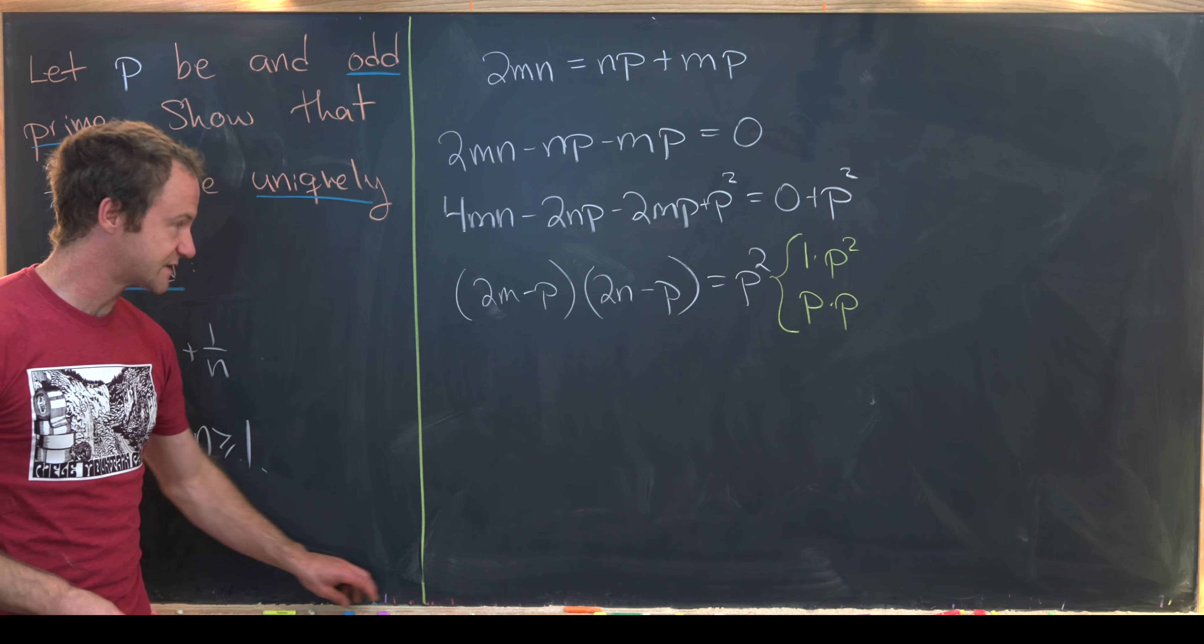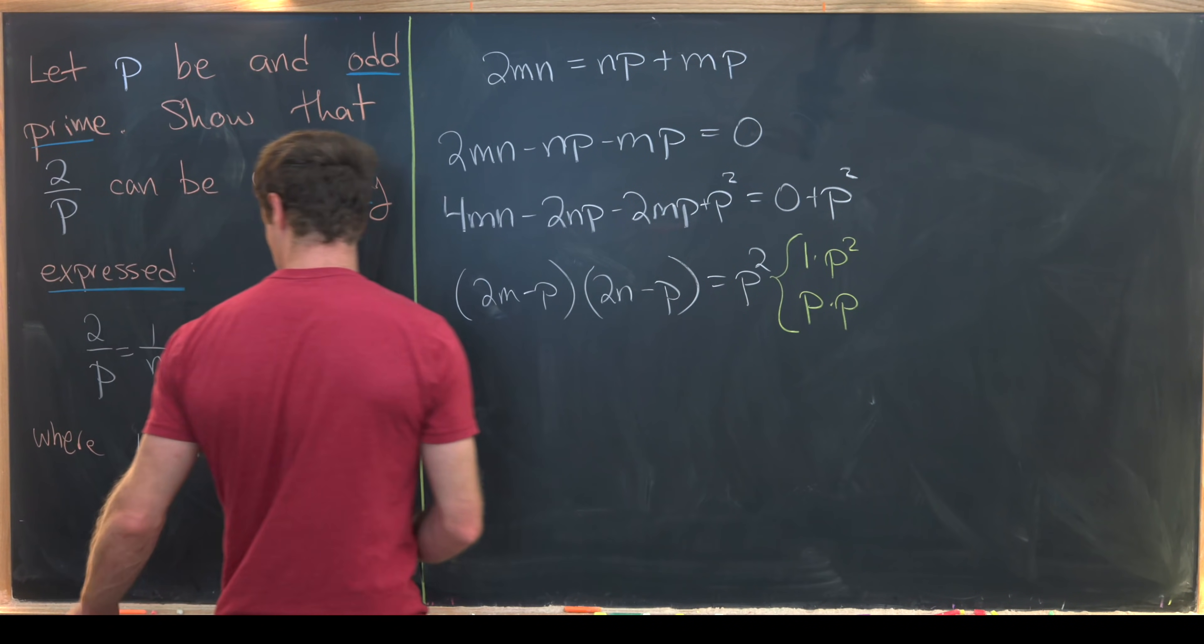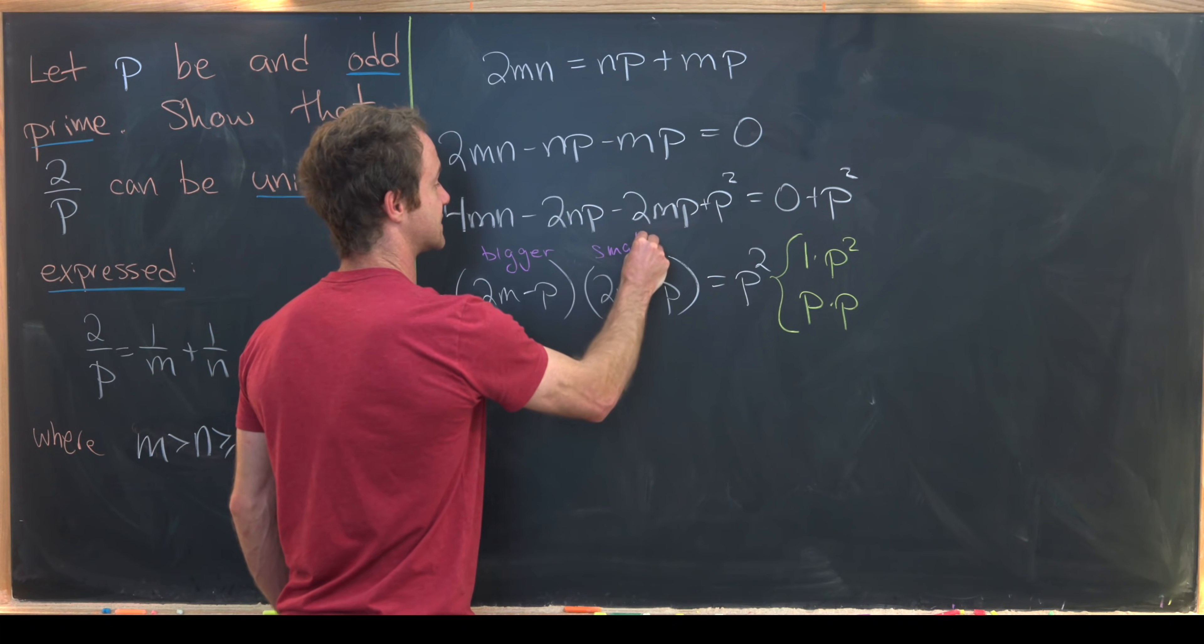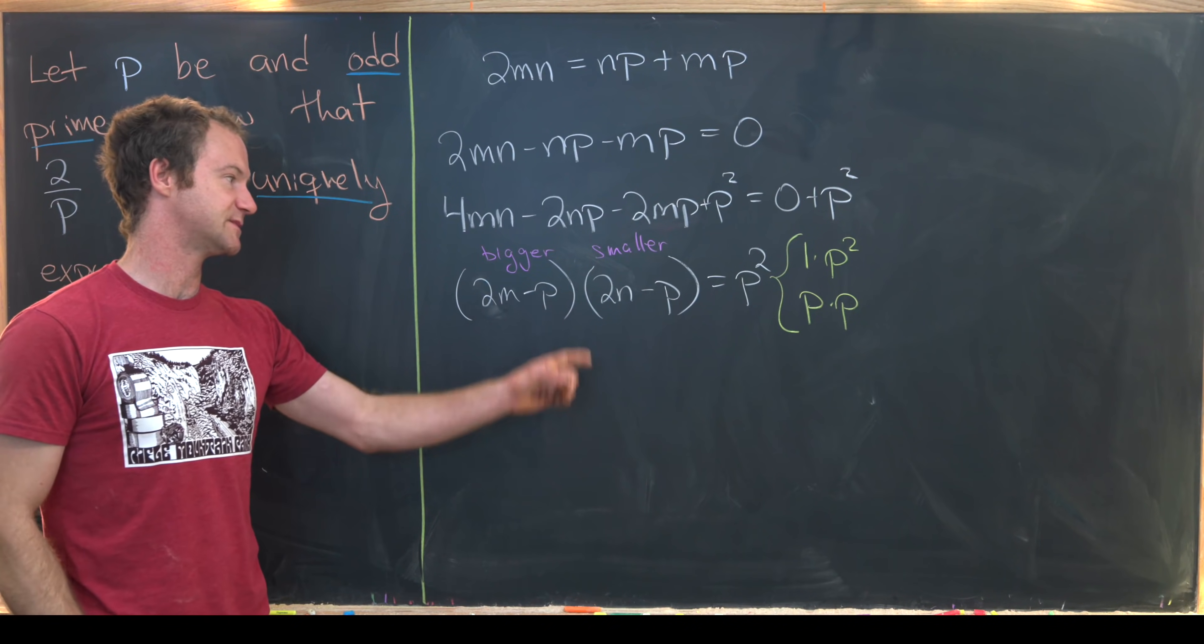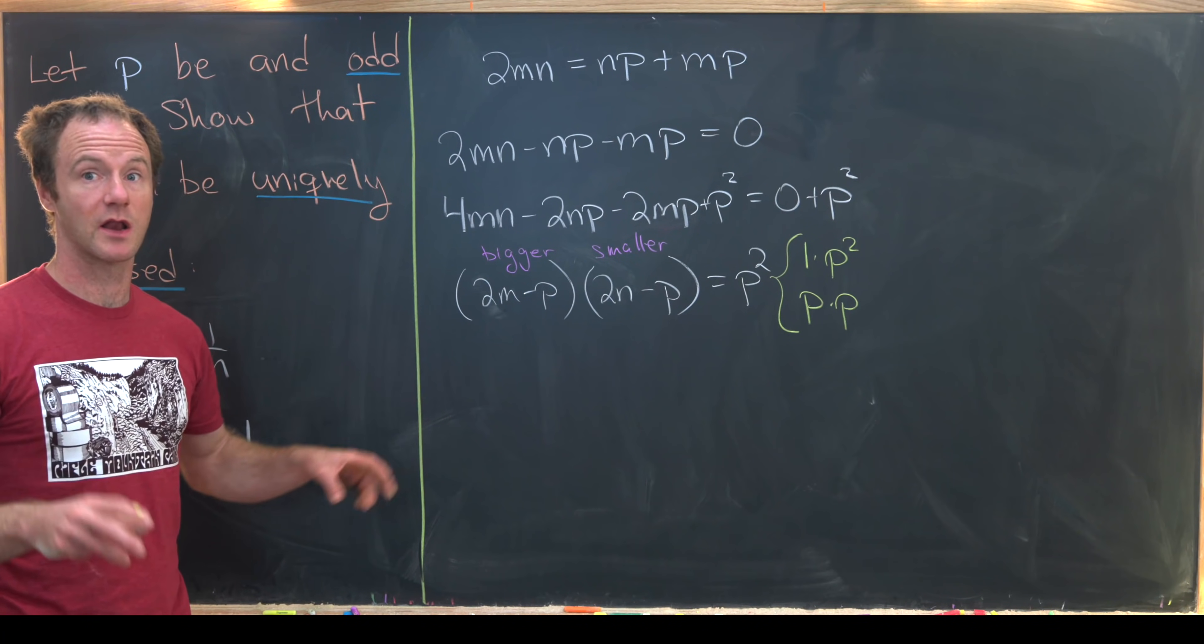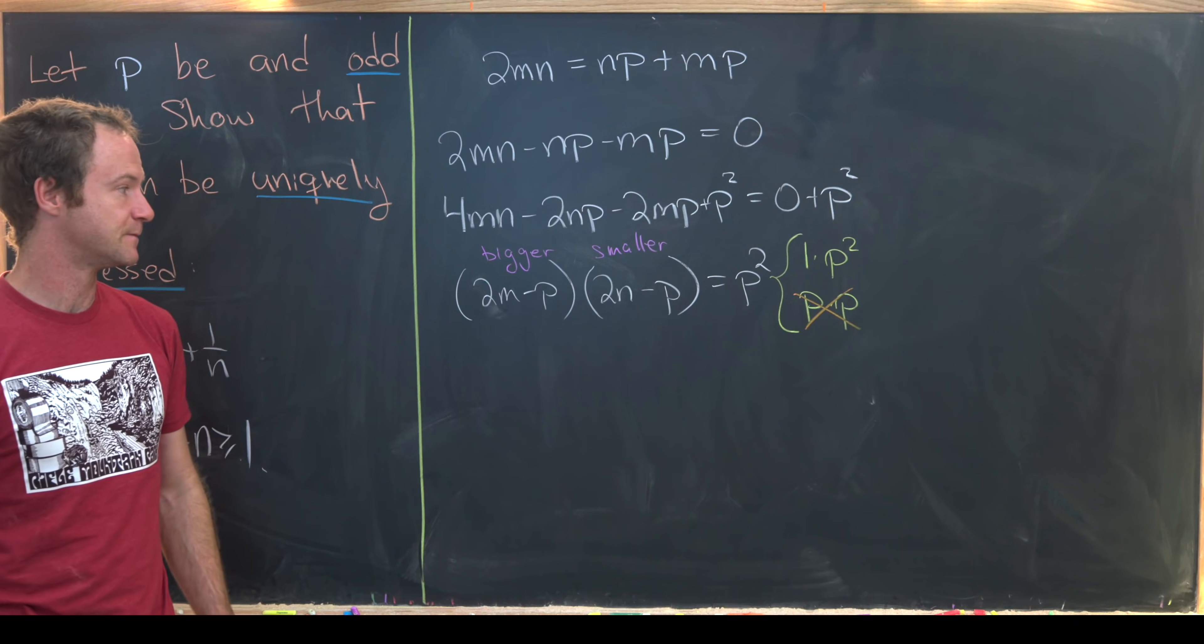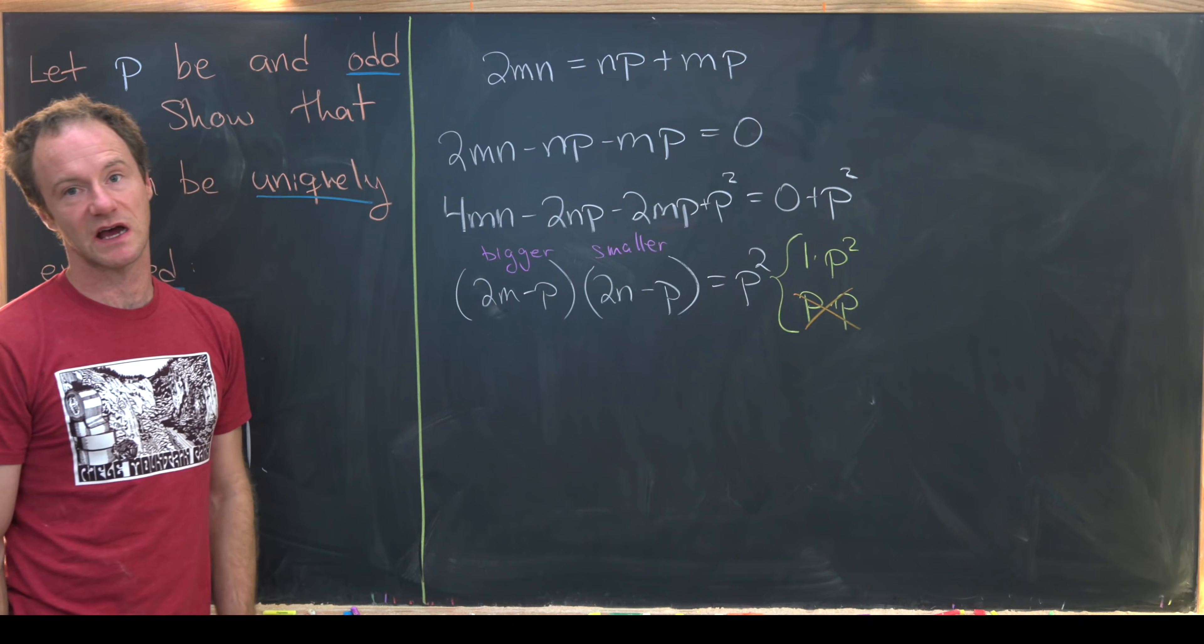Okay well let's notice that this P times P is not possible because by our condition down here that M is bigger than N, we know that this guy is bigger and this guy is smaller. Well if M is bigger than N then 2M - P is bigger than 2N - P. But that means they are non-equal. But if they are non-equal then they can't represent this factorization P times P.